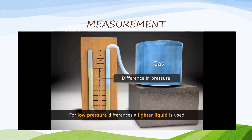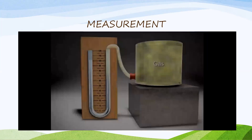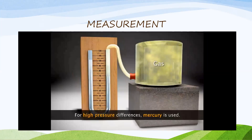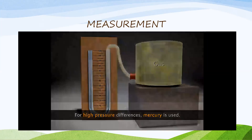For low pressure differences, a lighter liquid like water is filled in the U-tube, whereas to measure high pressure differences, a denser liquid like mercury must be used. These are the devices used to measure atmospheric pressure or pressure differences.